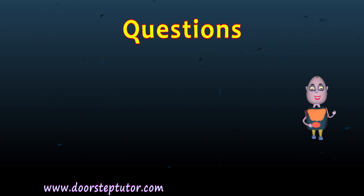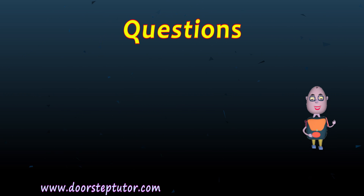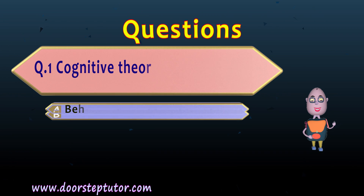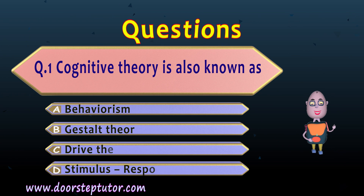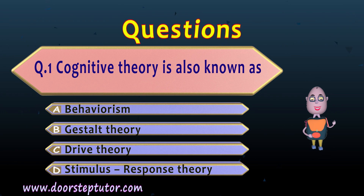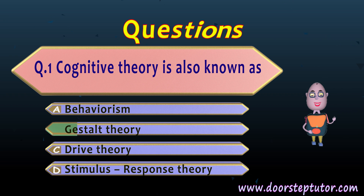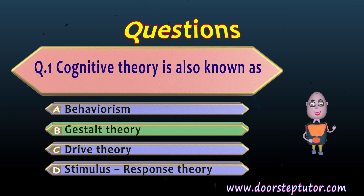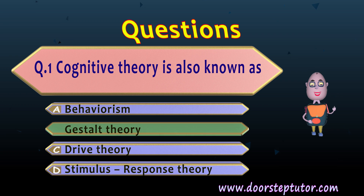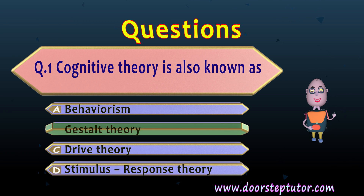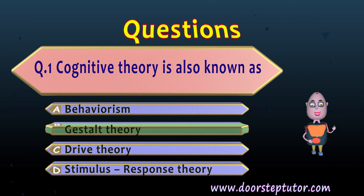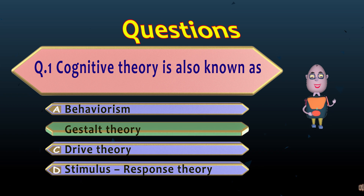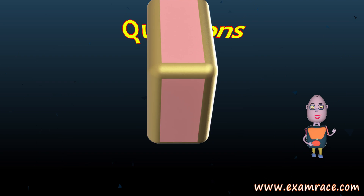Now let us do some MCQs on cognitive theory. Question number one: cognitive theory is also known as — the answer is B, because cognitive theory is associated with Gestalt psychology and therefore it is known as Gestalt theory.